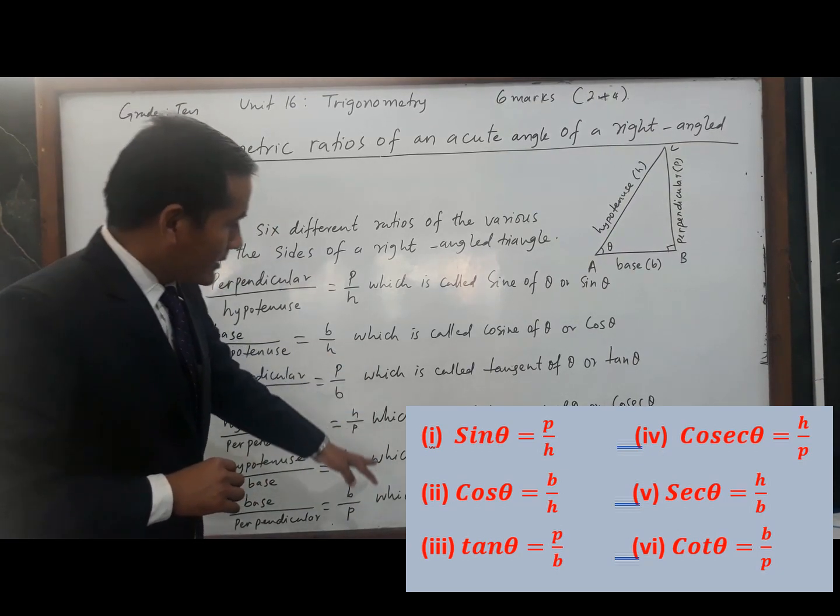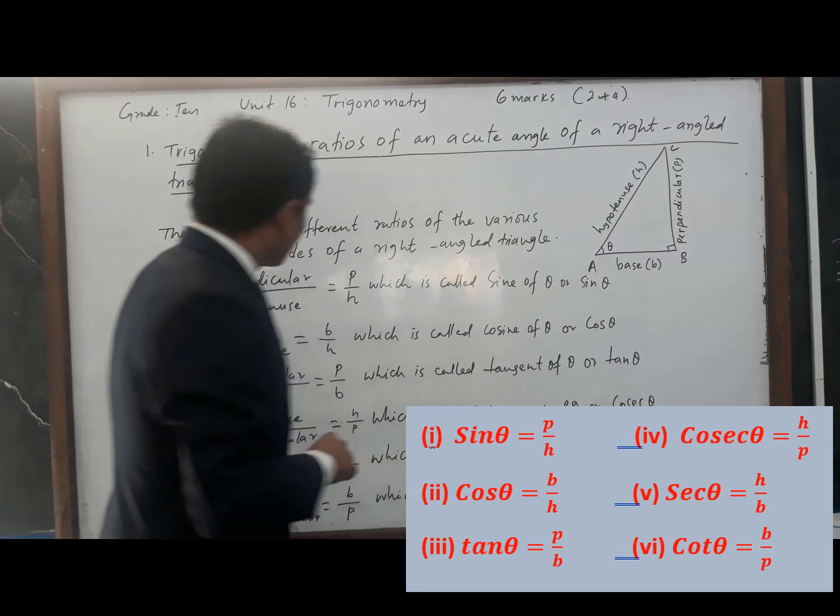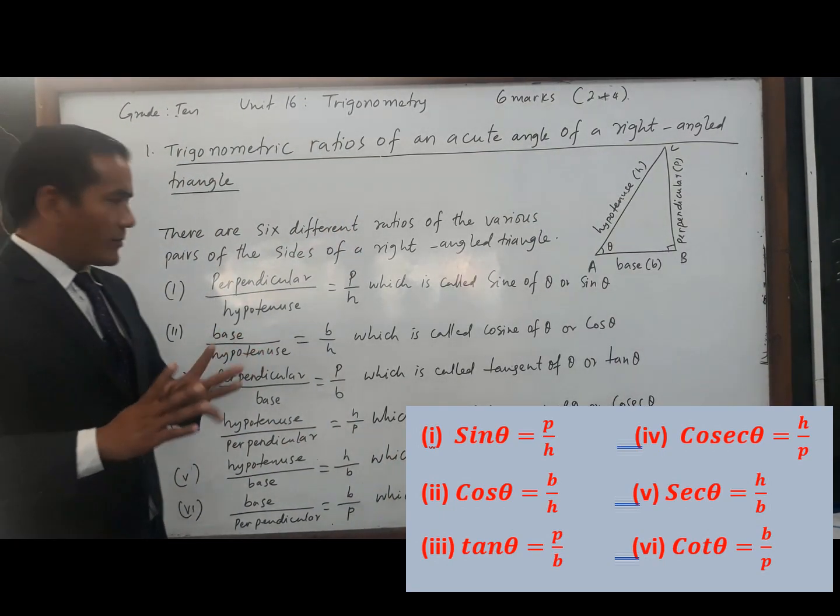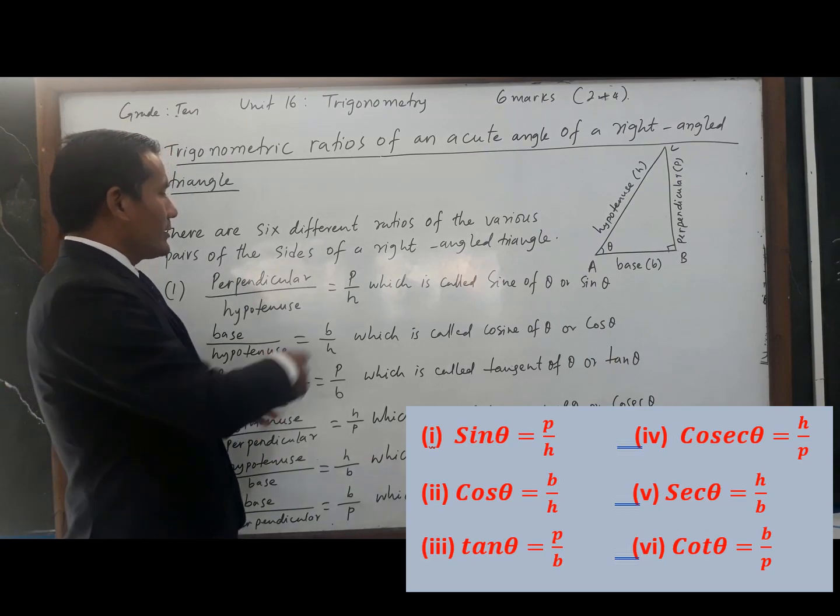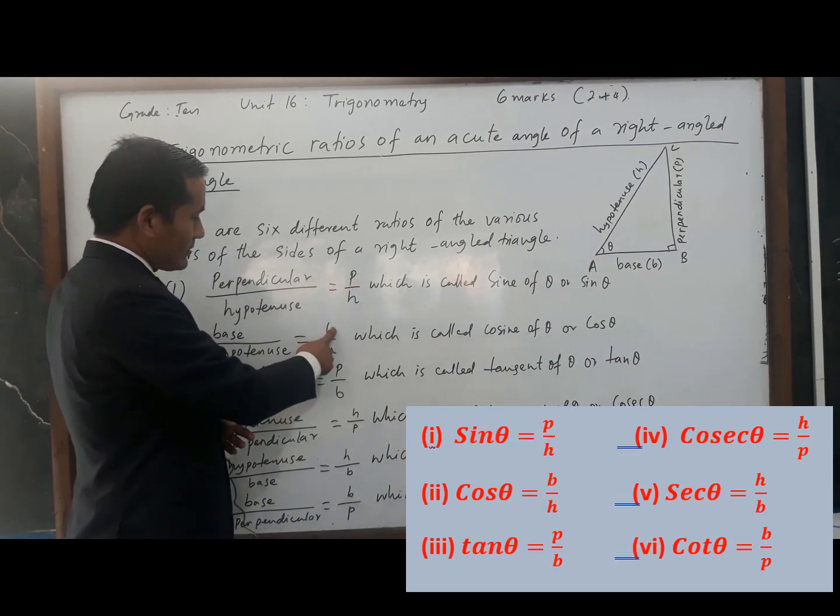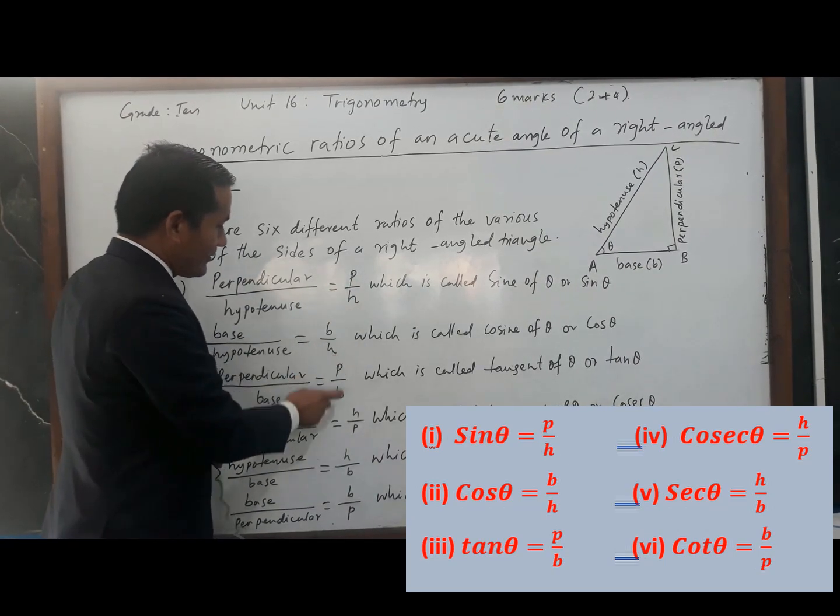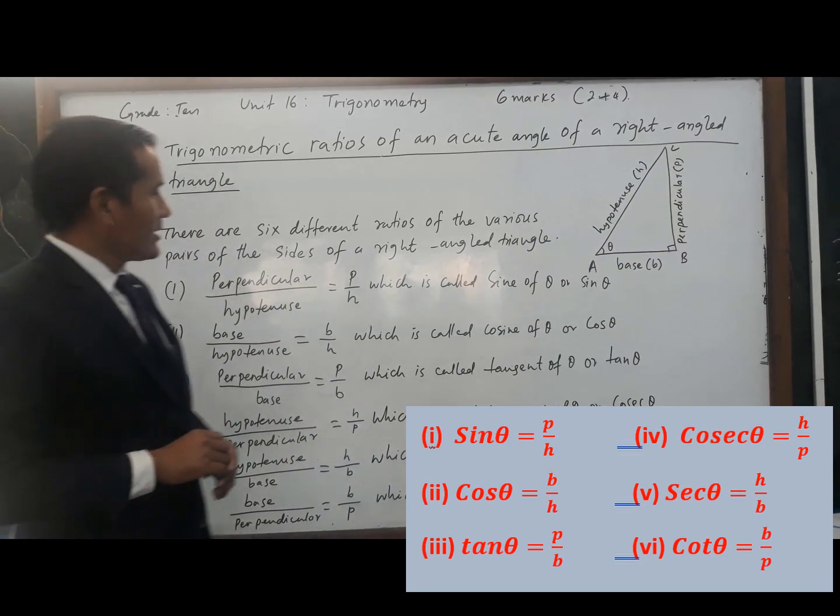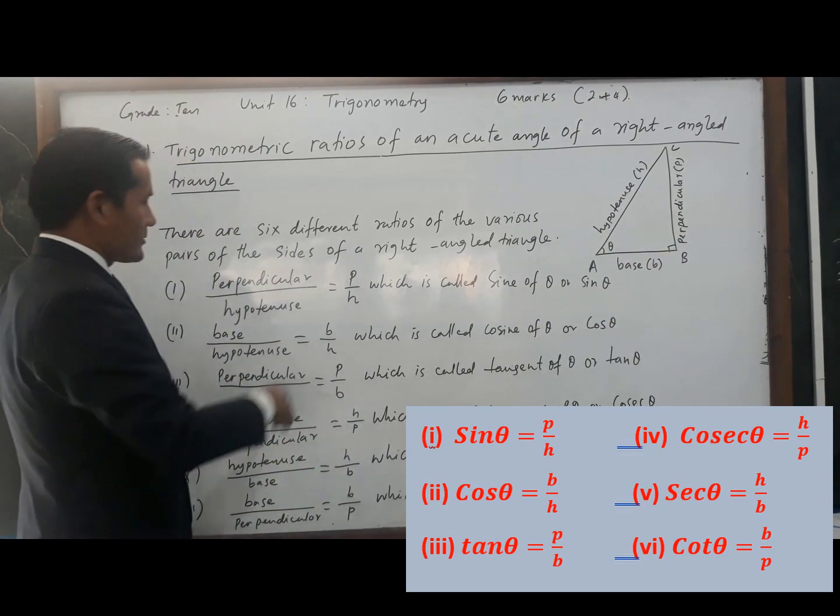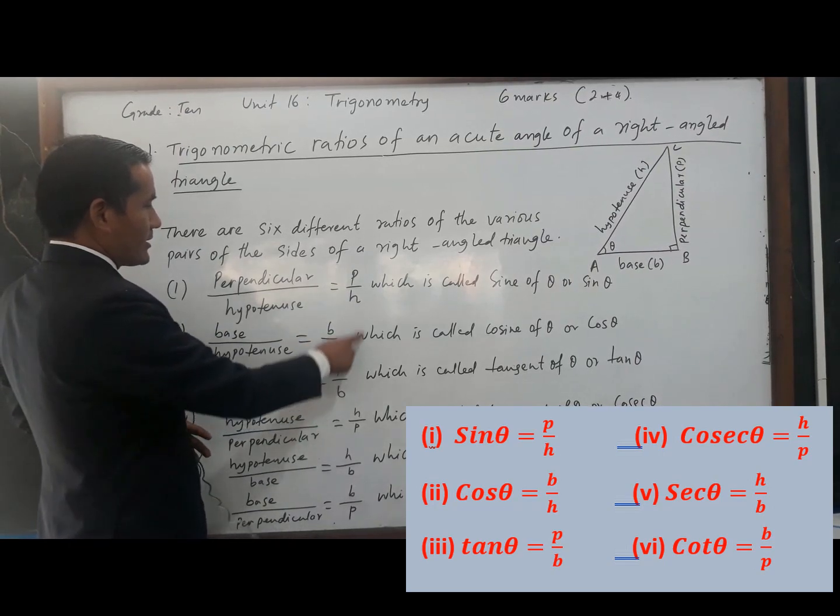It is very easy to remember. We can remember like this one: Pundit Badri Parashat Har Har Bhole. So if we remember these three ratios, it is very easy to know.